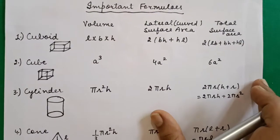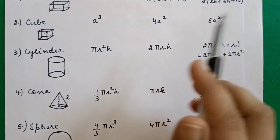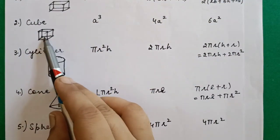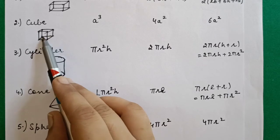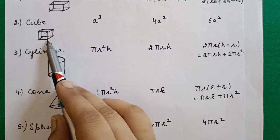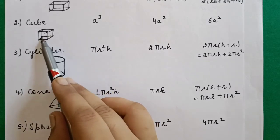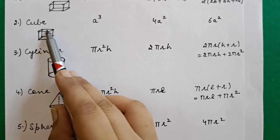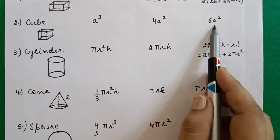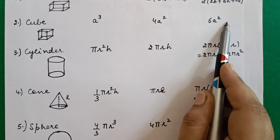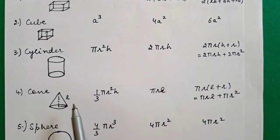For a cube, all sides are equal, so the bottom area is a×a = a². Top and bottom together are 2a², so subtracting from 6a² gives 4a² as the lateral surface area.